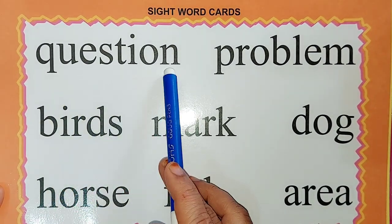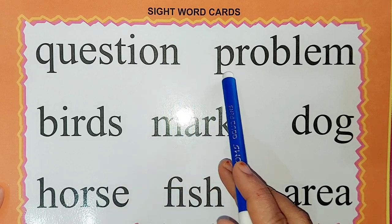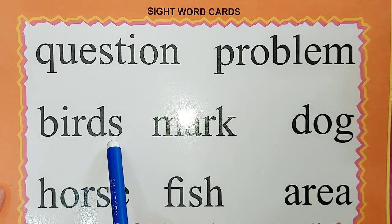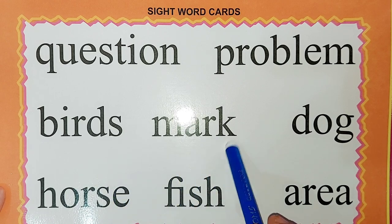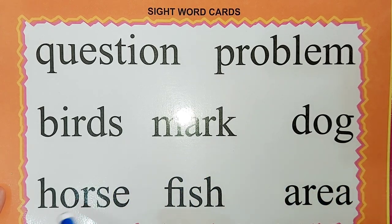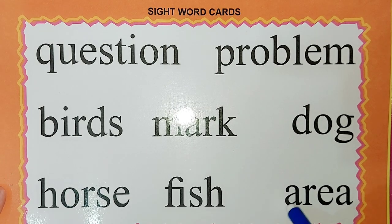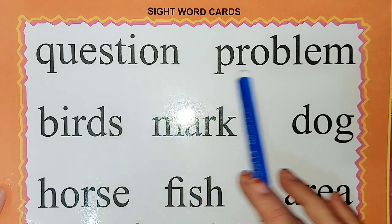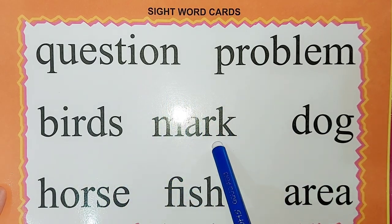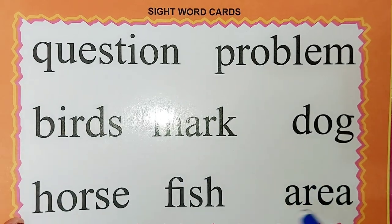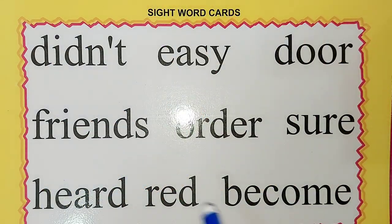Q-U-E-S-T-I-O-N: question. P-R-O-B-L-E-M: problem. B-I-R-D-S: birds. M-A-R-K: mark. D-O-G: dog. H-O-R-S-E: horse. F-I-S-H: fish. A-R-E-A: area. Once again: question, problem, birds, mark, dog, horse, fish, area.